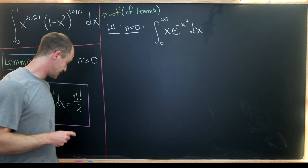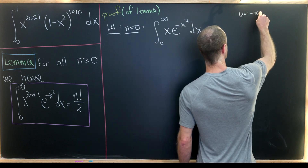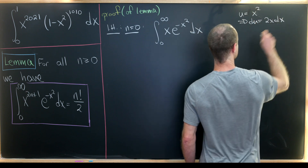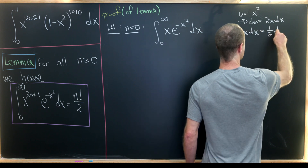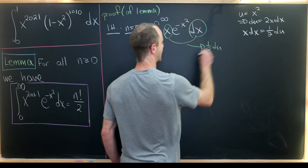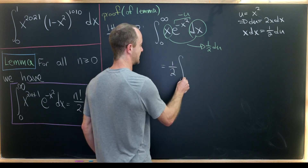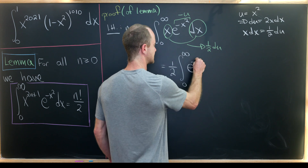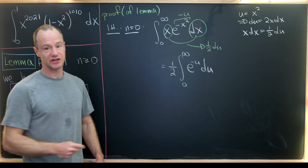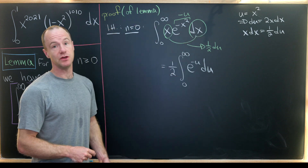We can calculate that using a substitution. Let's set u equal to x squared. That makes du equal to 2x dx, which means x dx is one half du. So we have one half times the integral from zero to infinity of e to the minus u du. When x equals zero, u equals zero, and as x approaches infinity, u also approaches infinity, so the bounds remain the same.